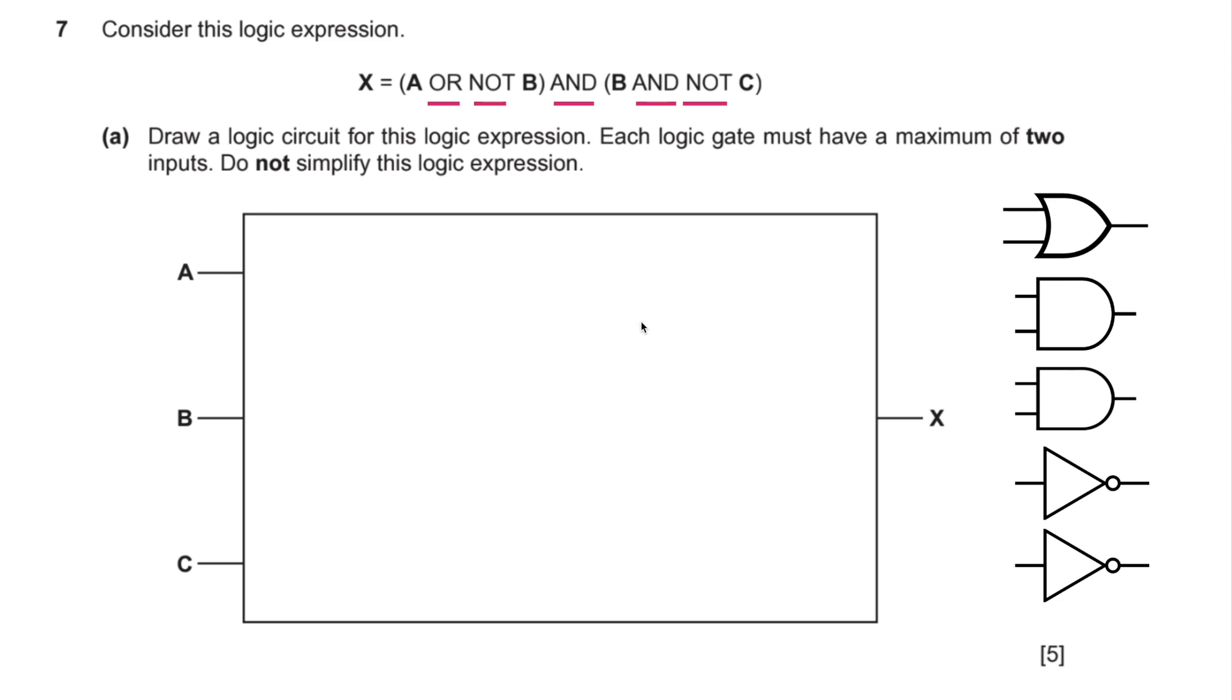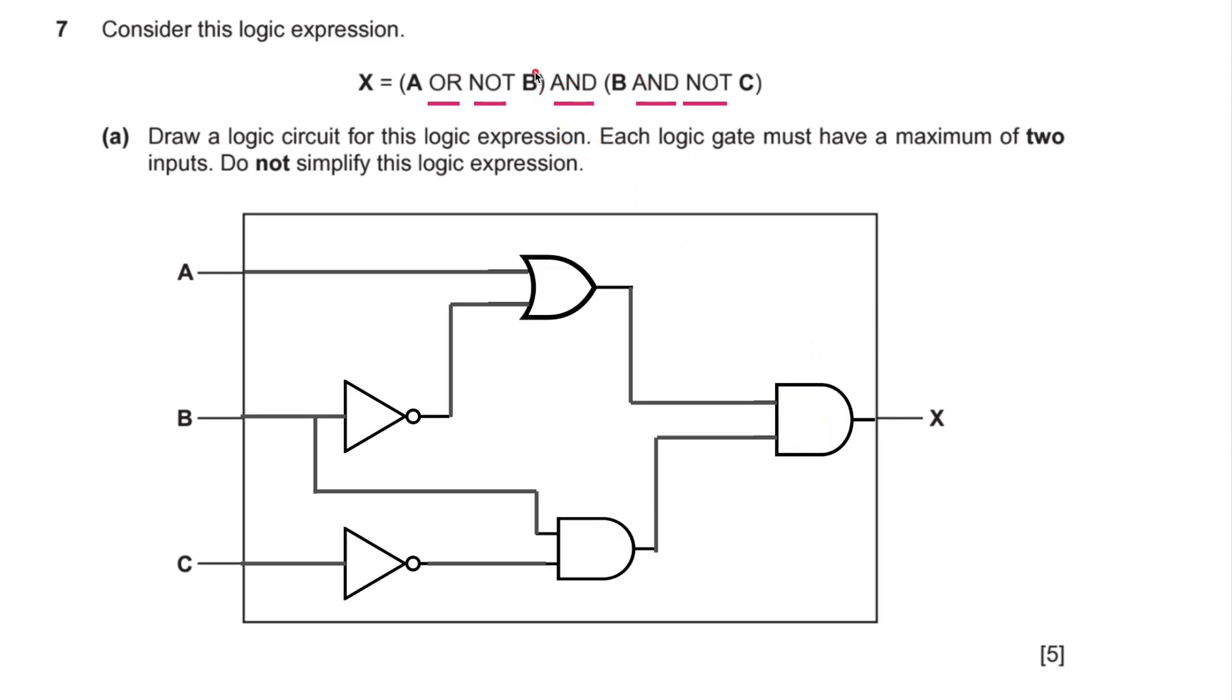Here we've got another logic circuit, a very easy one. X equals A or not B and B and not C. I've highlighted the or, the not, the and, the and, and the not. There we go. We've got an or gate, two and gates, and two not gates. We're just going to stick them into this. First of all, we've got an and here, so the and must go there. And then if I take A and not B, so A is going into the or gate. A or not B, so not B going there. And then B, coming down here, and not C. Going into that and gate.